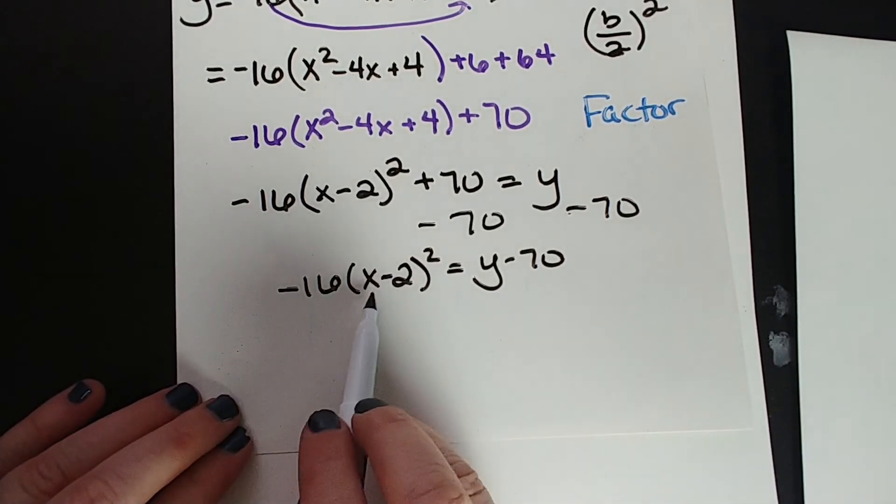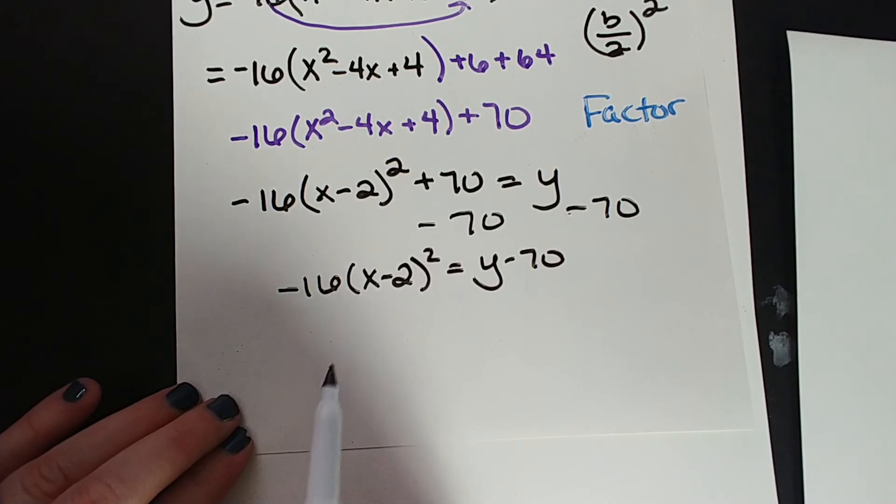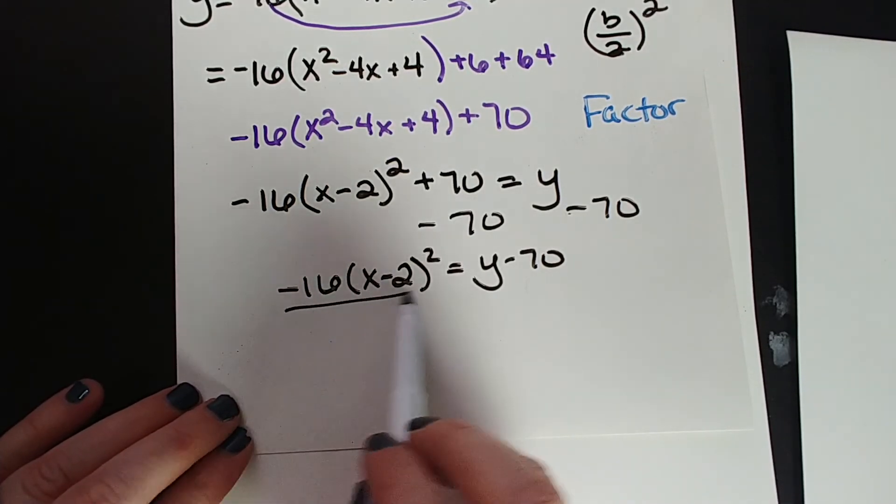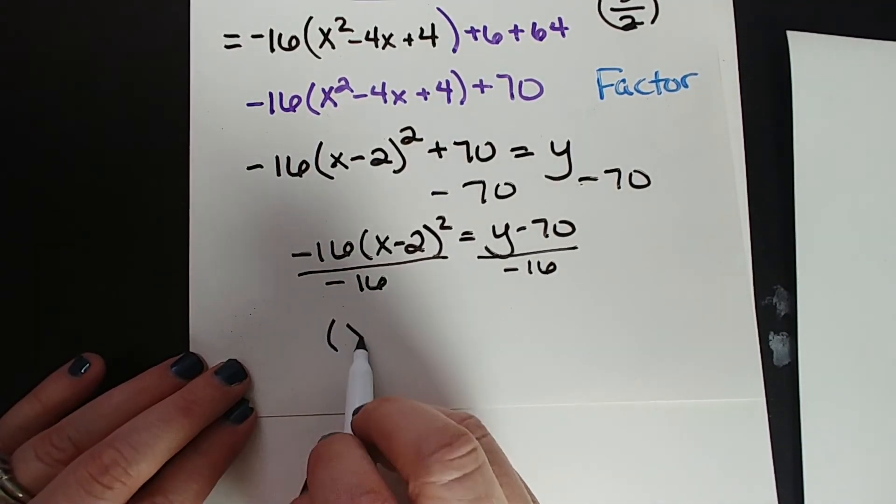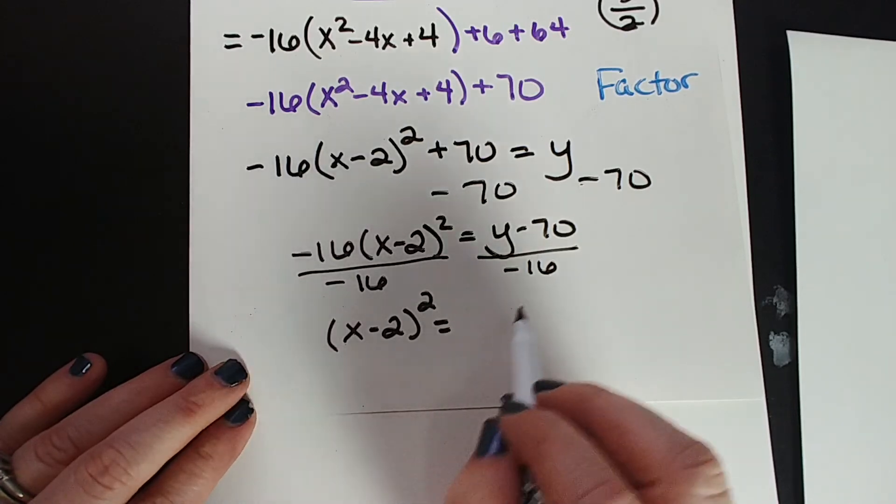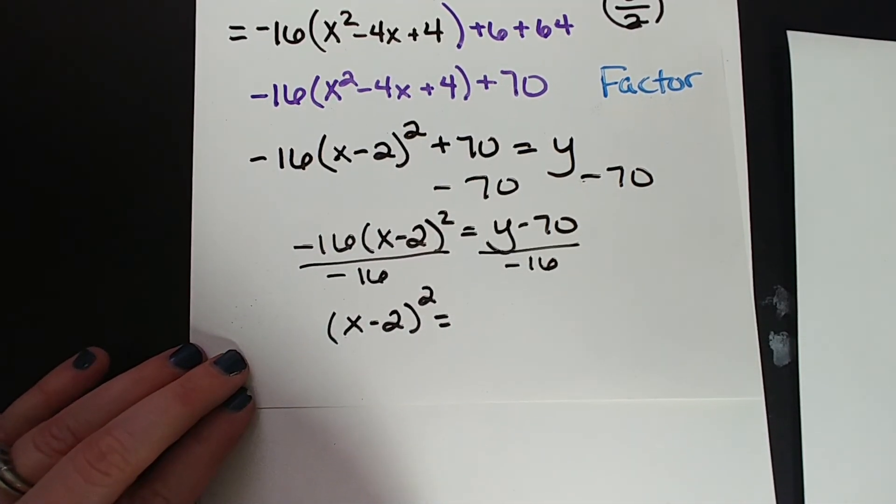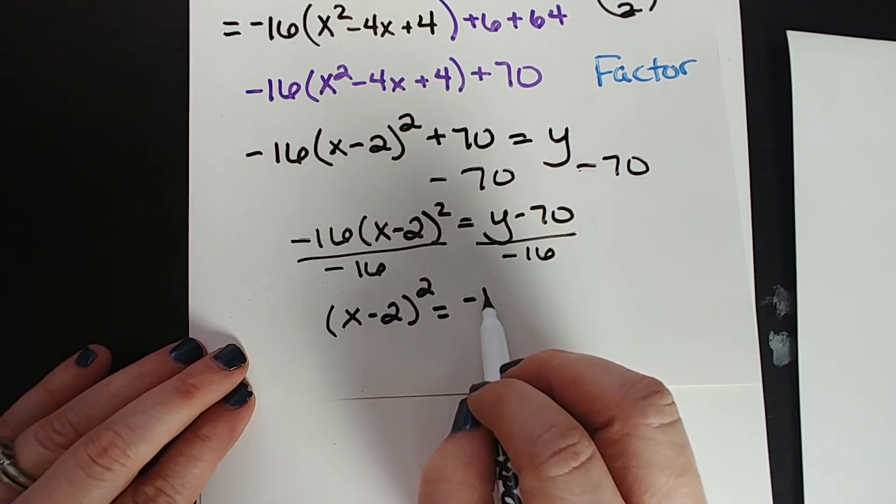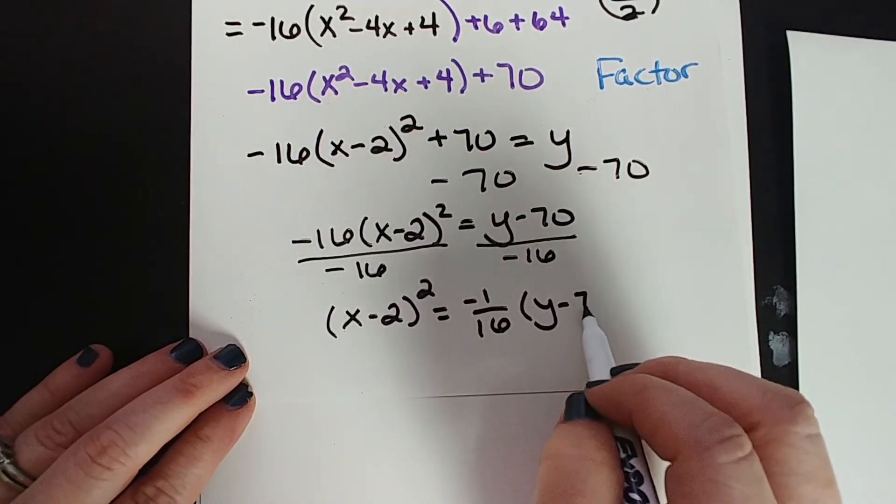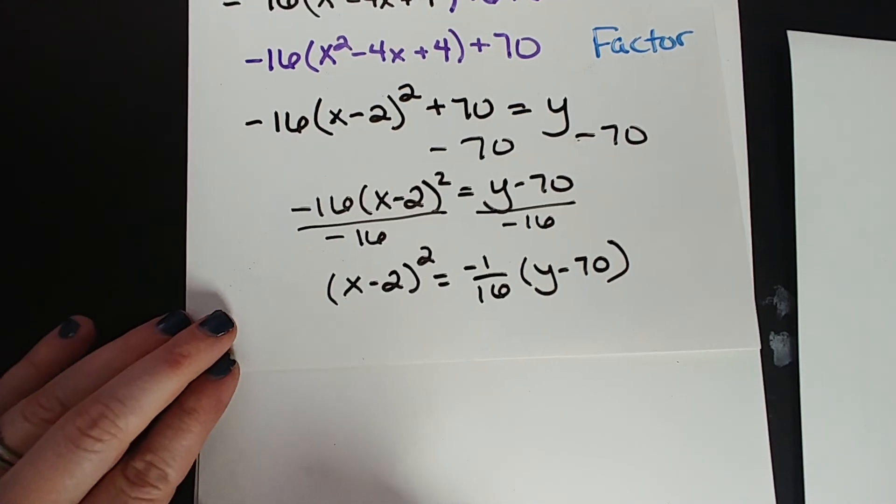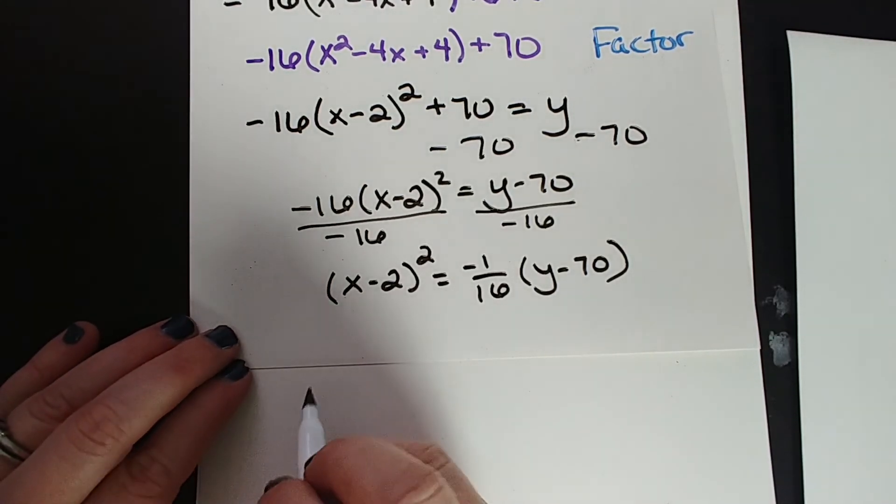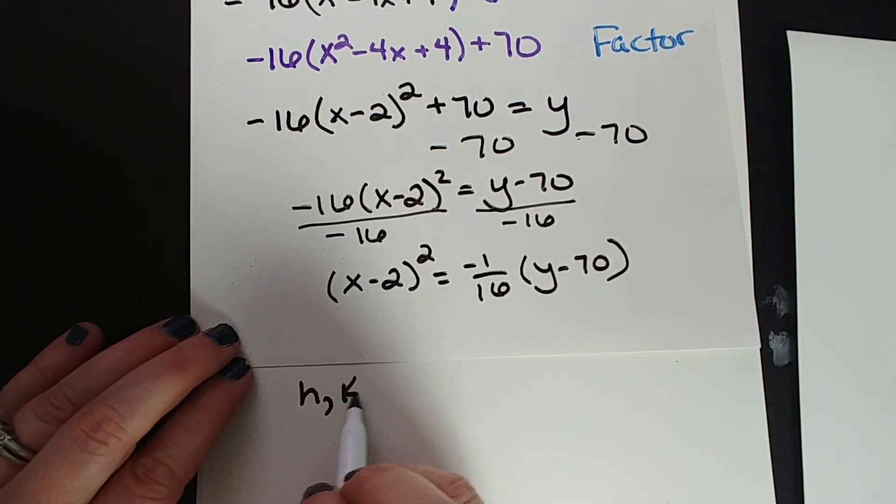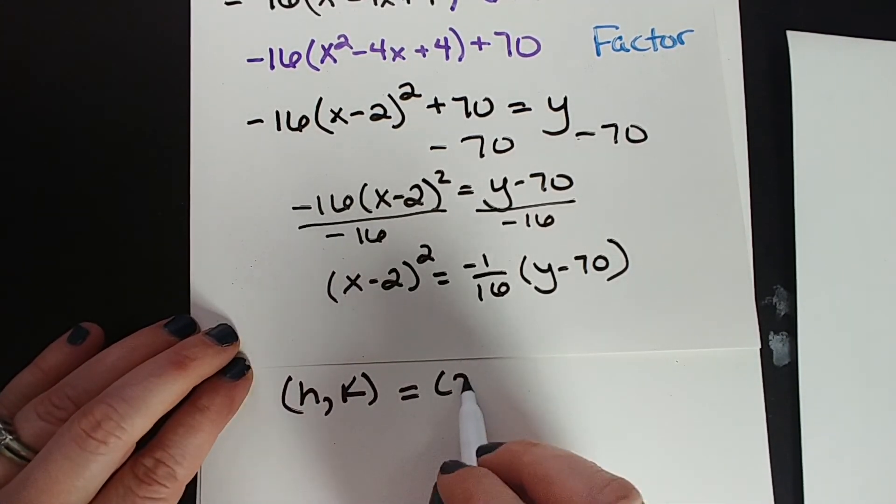Let's do one more thing. We don't have (x-2)² isolated yet, so let's divide by negative 16. Divide by negative 16. I know this is getting messy, but we're going to clean it up. (x-2)² equals, and now I have this negative 16 in the denominator. I'm just going to write it as a fraction. So there we go. That gives us our standard form. (x-2)² equals negative 1/16th times the quantity (y-70). That makes our hk, it makes our vertex, which is hk, remember opposite signs, (2, 70).